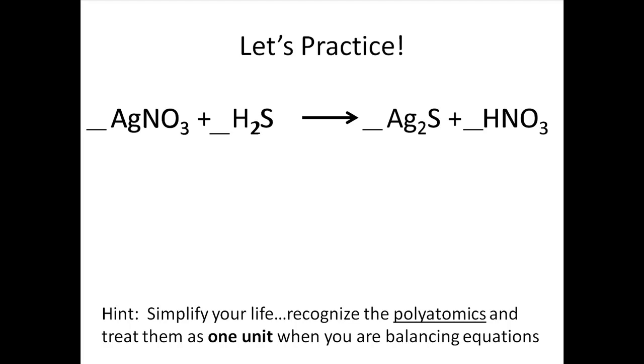This is a double replacement reaction involving silver nitrate and hydrogen sulfide. First, let's count how many silver atoms we have on each side. On the left, we have 1. On the right, we have 2, due to the subscript in Ag2S. That means we have to put a 2 in as the coefficient in front of the silver nitrate. Now we have 2 silver atoms on each side.